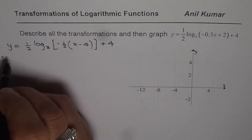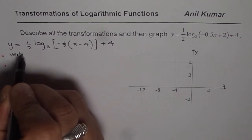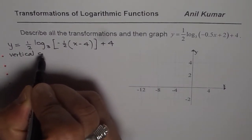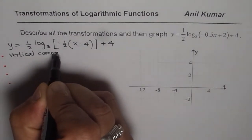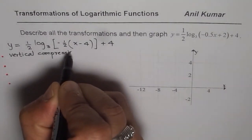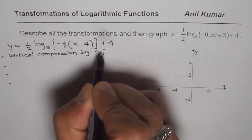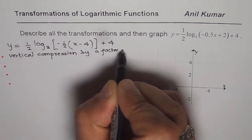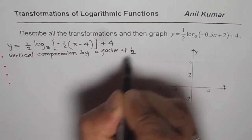So half here signifies vertical compression. Vertical compression by a factor, factor since we are multiplying, factor of half.